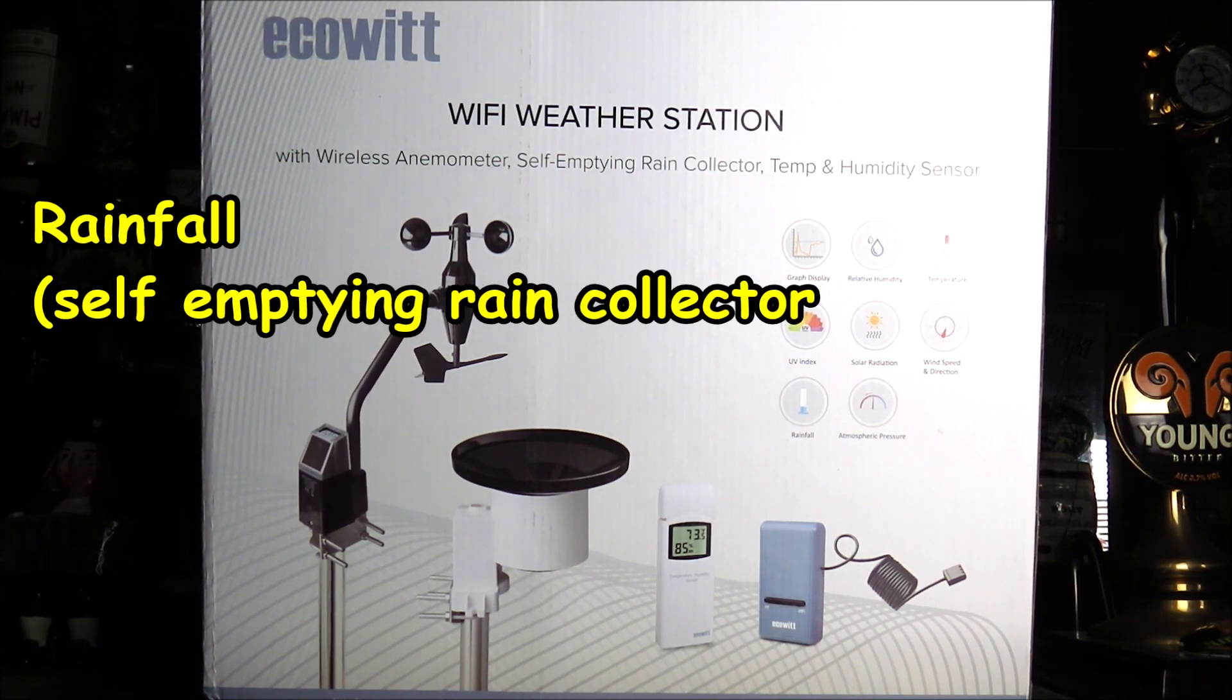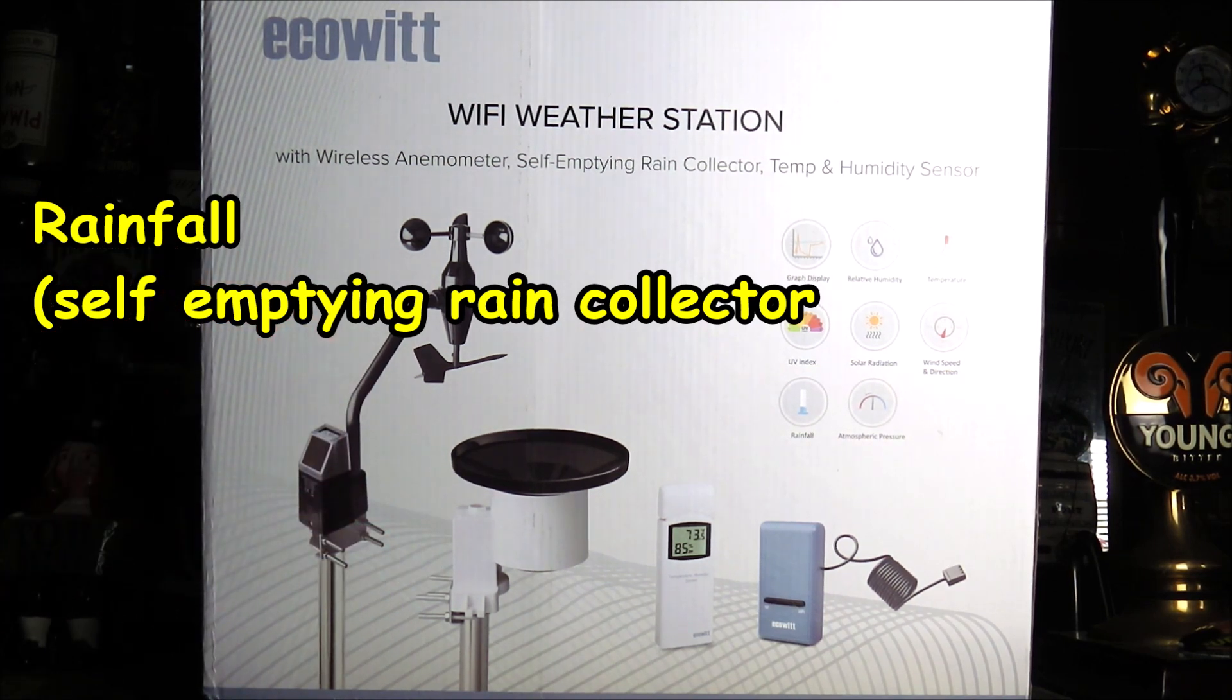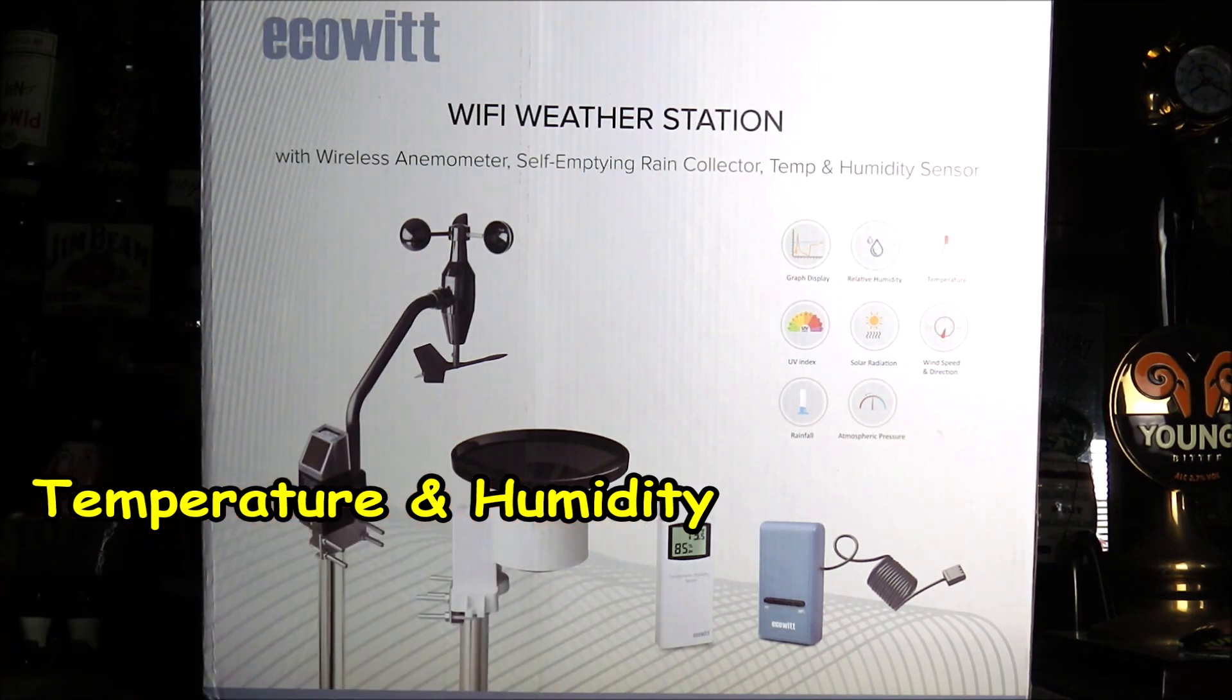You have the self-emptying rain collector, which is going to measure the rainfall amounts, and the temperature and humidity sensor which is combined into one unit.